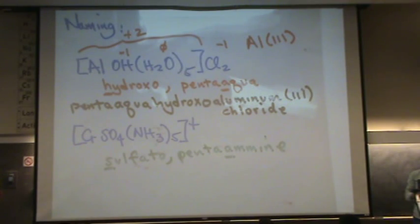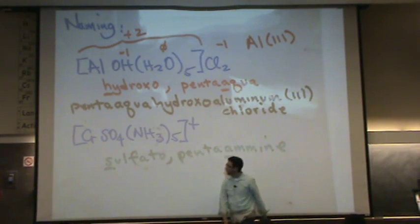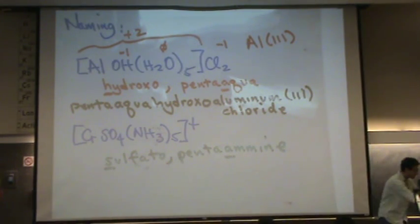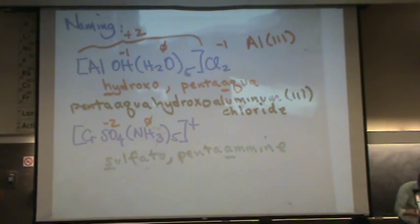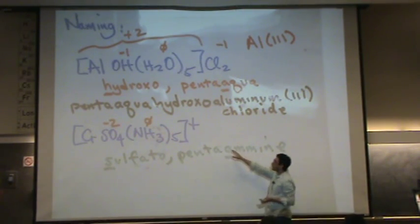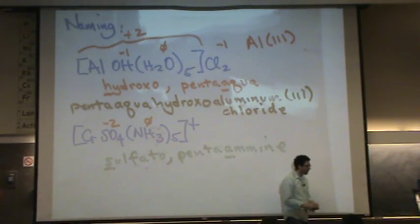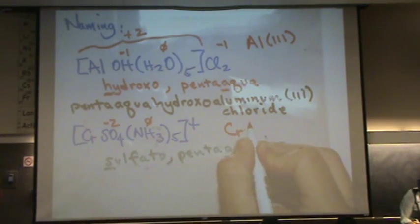The chromium now, we want to know the charge on chromium. Well, the brackets here give it to you. The overall charge is plus one. The sulfate has a charge of minus two and the amine is zero. So chromium minus two equals overall charge of plus one. Our chromium is plus three, which is a common charge for chromium.